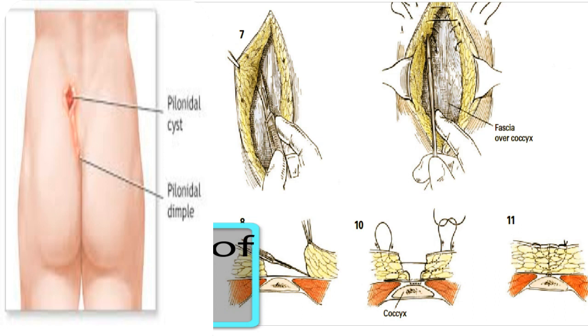Electrocoagulation may be used to control bleeding and to keep the amount of buried suture material to a minimum. Some prefer to avoid burying any suture material by using compression or electrocoagulation to control all the bleeding points. After careful inspection of the wound to make sure that all sinus tracts have been removed, the subcutaneous fat is undercut at its junction with the underlying fascia.